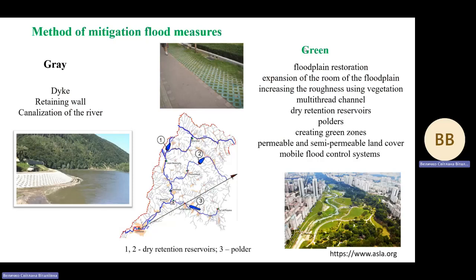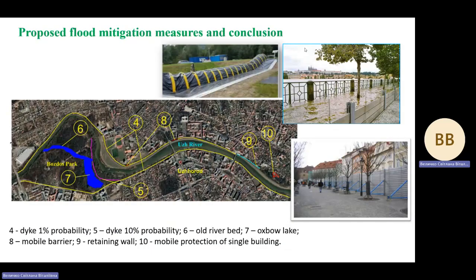In this work, mobile flood control systems are considered as green measures for protection. Dry mountain retention reservoirs are a rather effective method of flood mitigation, but for Ushgorod specifically, retention reservoirs are located at a considerable distance from the city, and their influence on water levels would be insignificant.